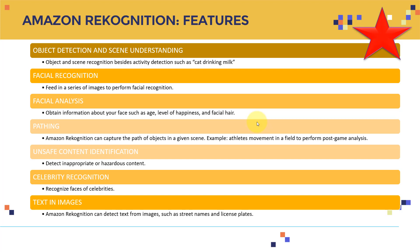There is also unsafe content identification, so you can detect inappropriate or hazardous content. Celebrity recognition allows you to recognize faces of celebrities. And text in images — Amazon Rekognition can detect text from images such as street names and license plates.